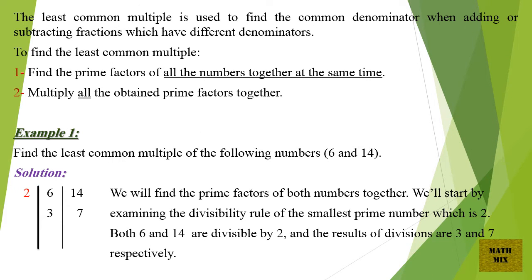The least common multiple is used to find the common denominator when adding or subtracting fractions which have different denominators. To find the least common multiple: 1. Find the prime factors of all the numbers together at the same time. 2. Multiply all the obtained prime factors together.